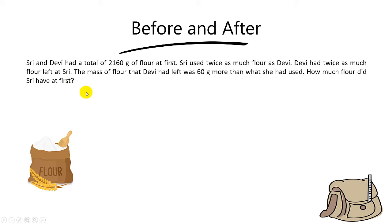Since this question involves before and after, let's find the units for the amount of flour they use. Since the question says that Shree used twice as much flour as Debbie, Debbie would be one unit while Shree would be two units.